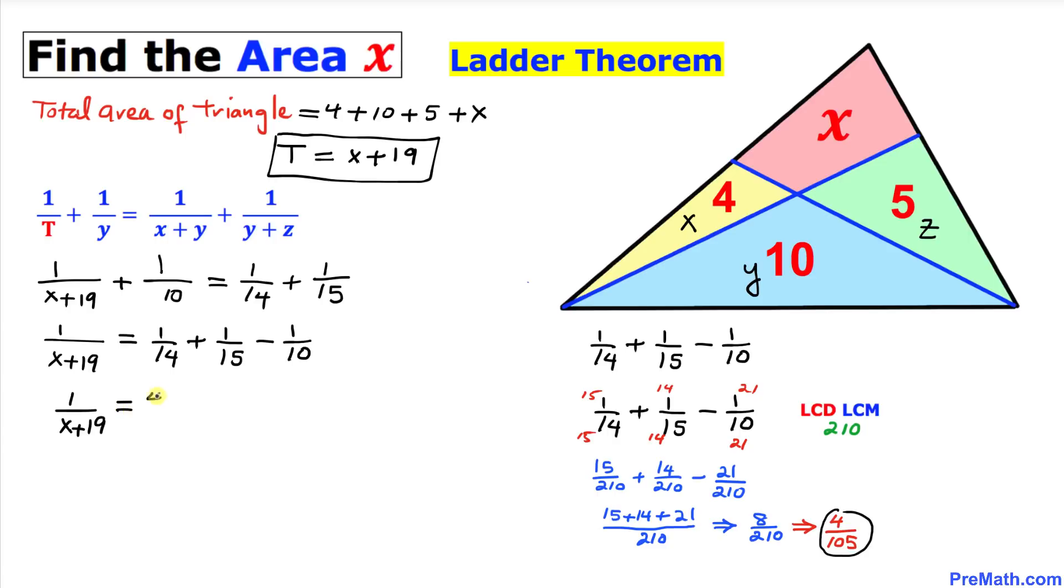Let's go ahead and solve for x and we're going to crisscross, we're going to cross multiply. So we are going to get 4 times x plus 76 equals 105.